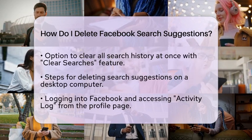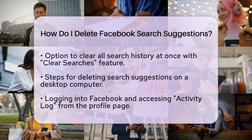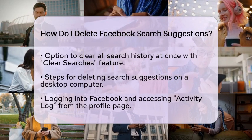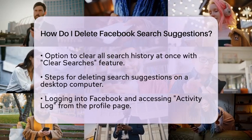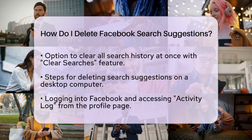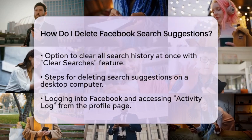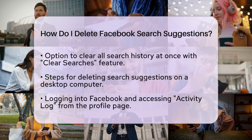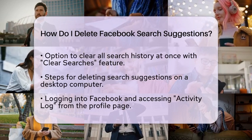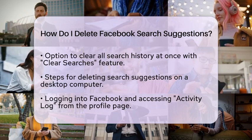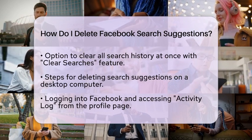In the Activity Log, find Search History. Similar to the mobile version, you can delete individual searches by clicking the three dots next to each one and choosing Delete. If you want to erase everything, use the Clear Searches option.